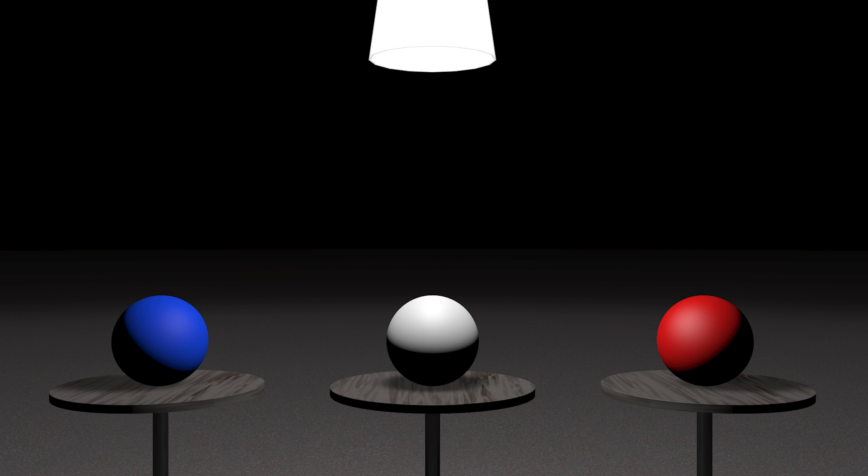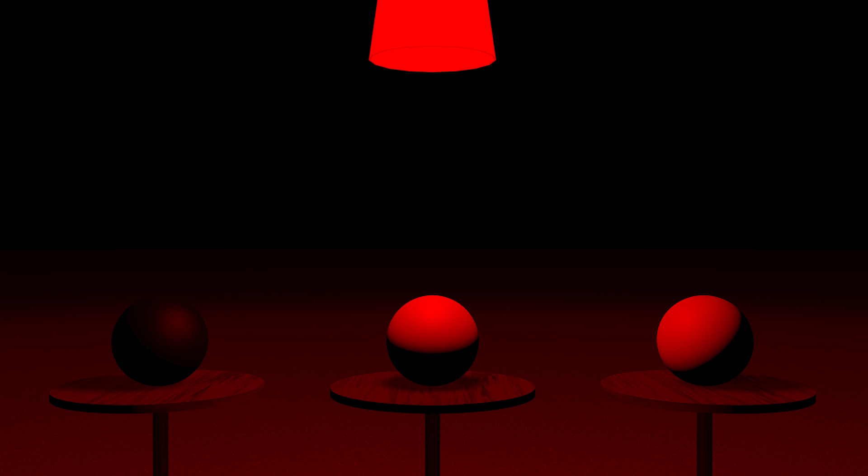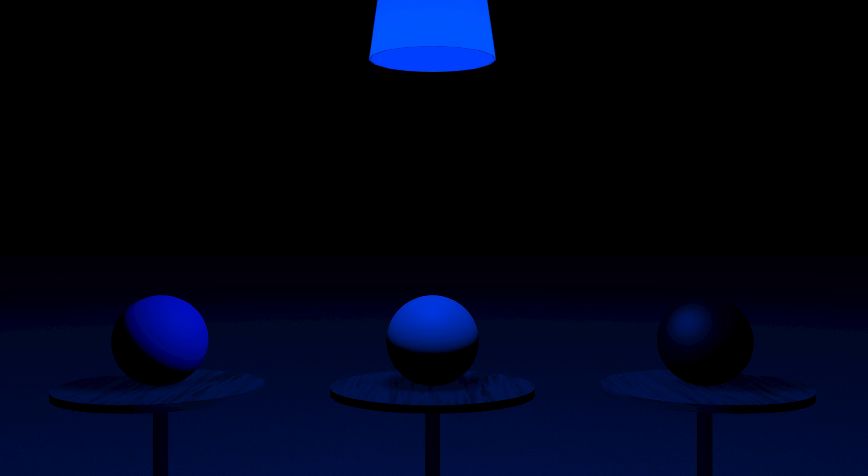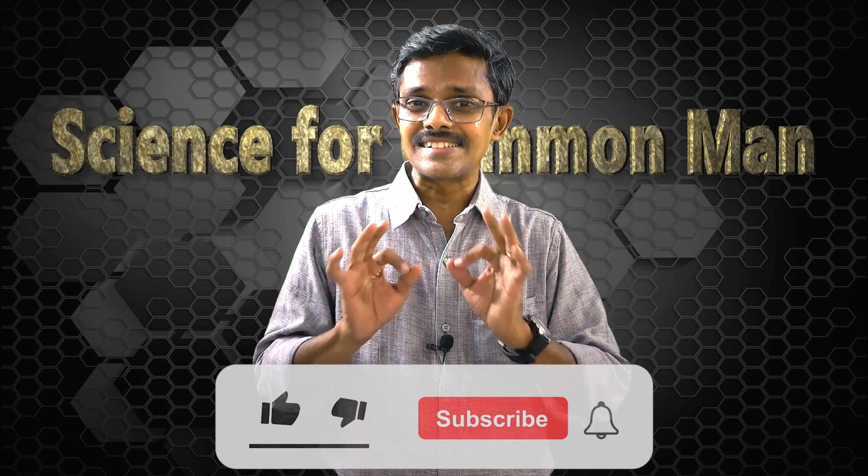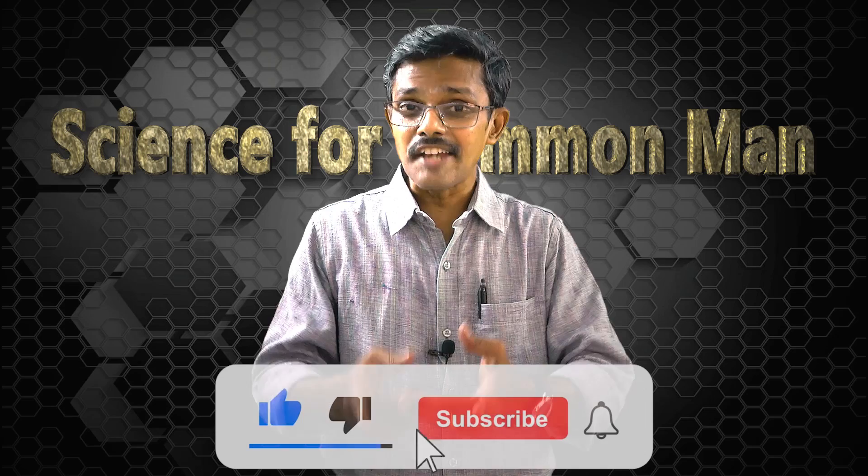Red, white and blue. Now let's switch off white light and switch on a red light. That's interesting. Now we have two red balls and a black ball. Let's switch off red light and switch on a blue light. That's more interesting. Now we have two blue balls and one black ball. This is not magic. It's science of colors. Let's dive into it.